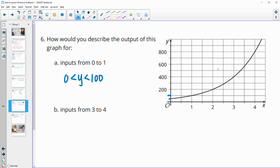Then the inputs from three to four. So here's the inputs of three where they start. Here's the inputs of four where they are. And so if we follow this over, we see that the outputs are going to be between 400 and 800. So 400 is going to be less than or equal to Y is going to be less than or equal to 800 for those outputs.